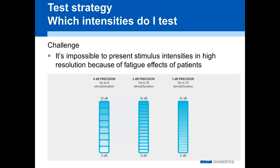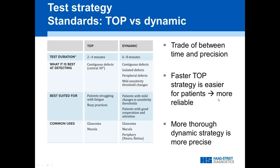Which intensities do you test? The same problem as with spatial extent — we have to compromise. The most commonly used strategies are either TOP or Dynamic. Both have their merits as it's a trade-off between test time and precision. From a purely mathematical point of view, the Dynamic strategy — taking six to eight minutes — is more precise, really better at finding subtle isolated defects. For the majority of defects, it doesn't matter so much.